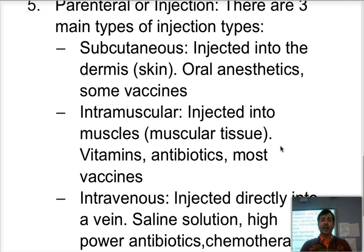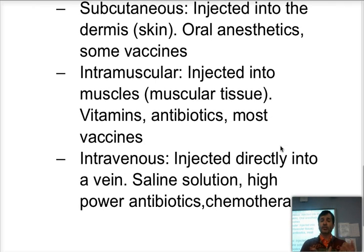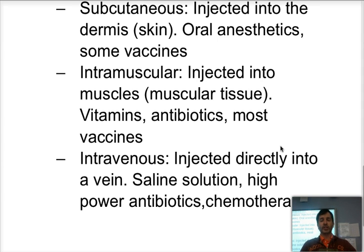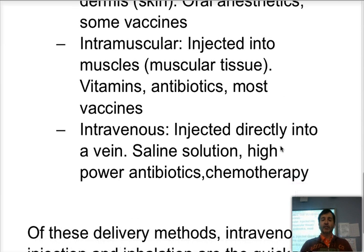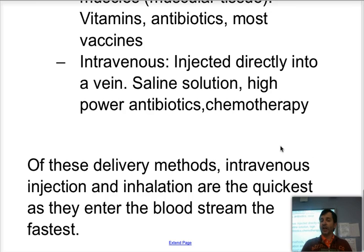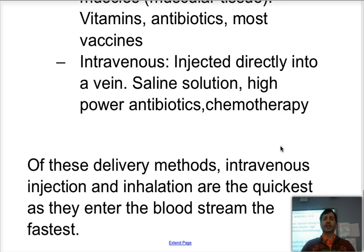And finally we have intravenous, where you find a vein and inject it directly into the vein. That is going to be our fastest type of input into the system because it goes into the bloodstream and is distributed throughout very quickly. The only other one that is somewhat as fast is inhalation, because the alveoli also contact the bloodstream. But definitely no method is faster than intravenous injection.